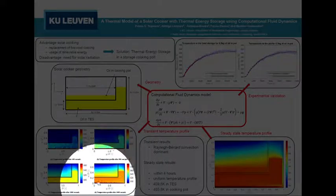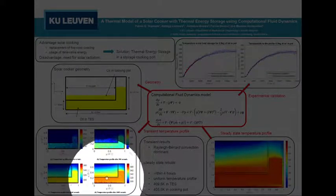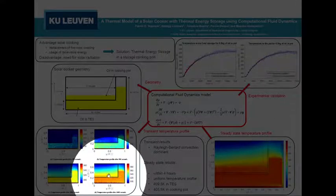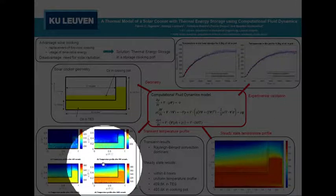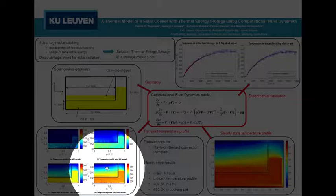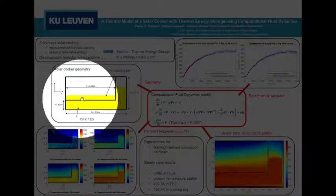And you have conduction of heat through the top of the cooker by the air, which is the white region here above the cooking oil.